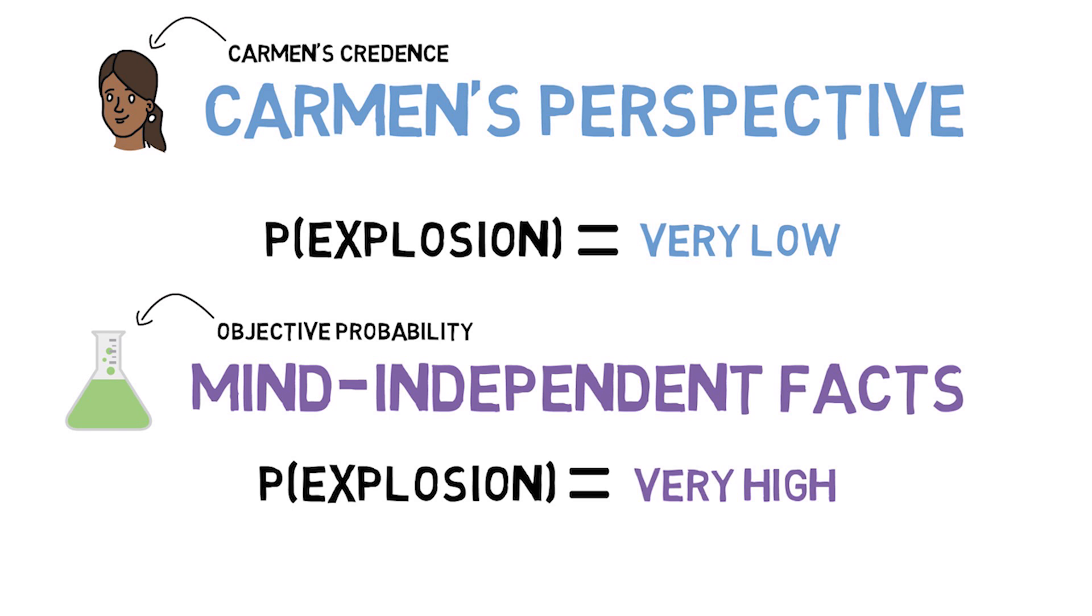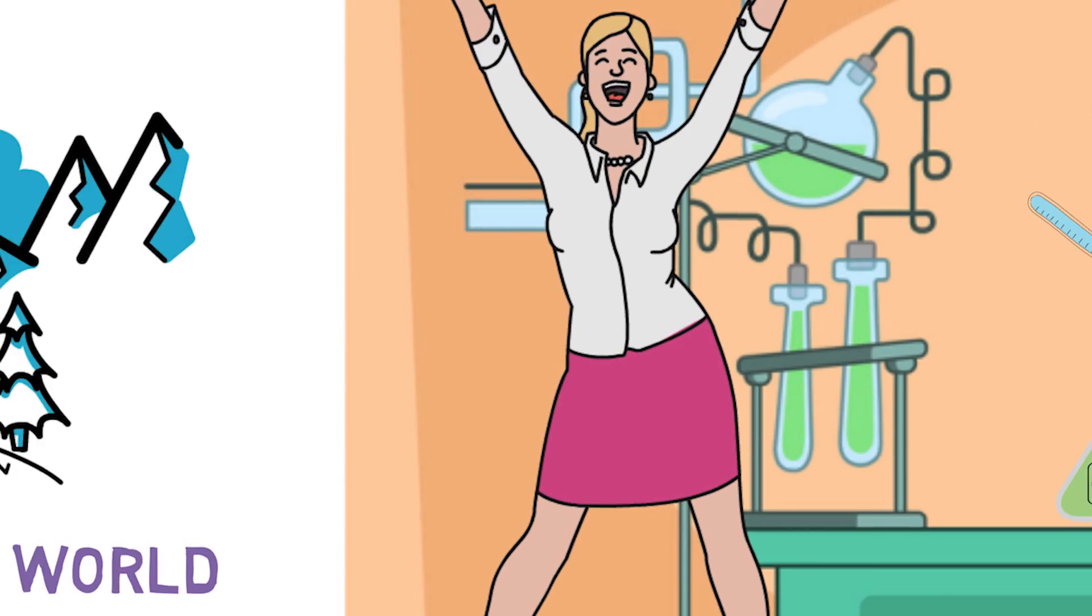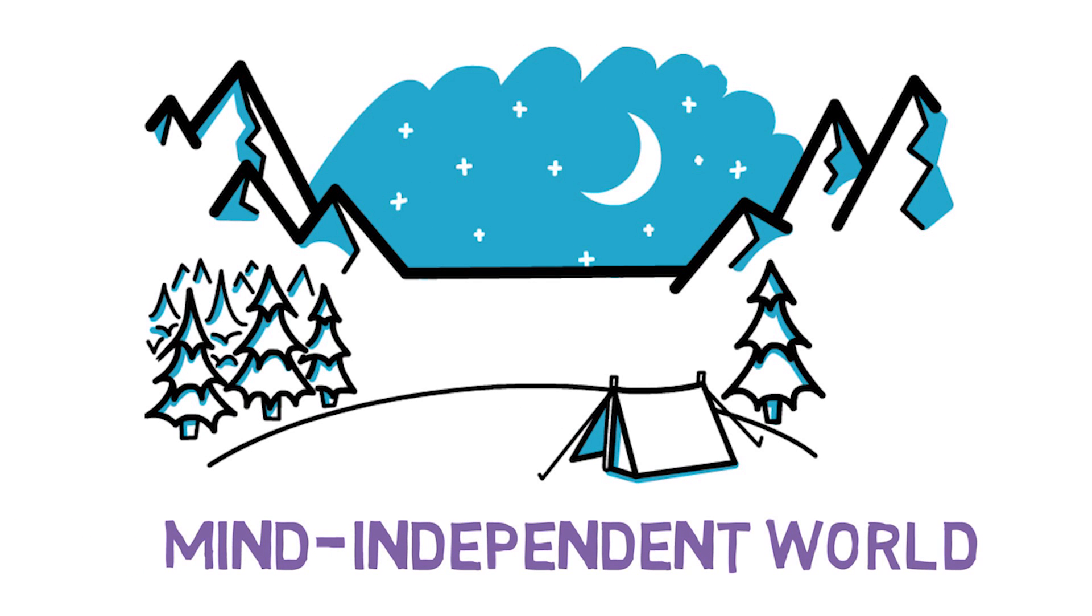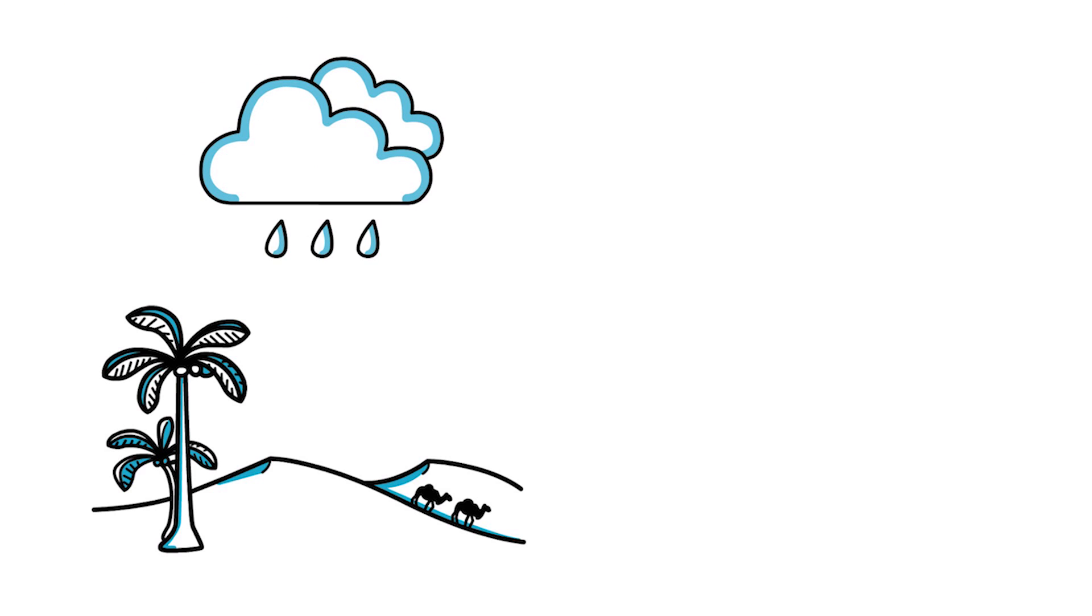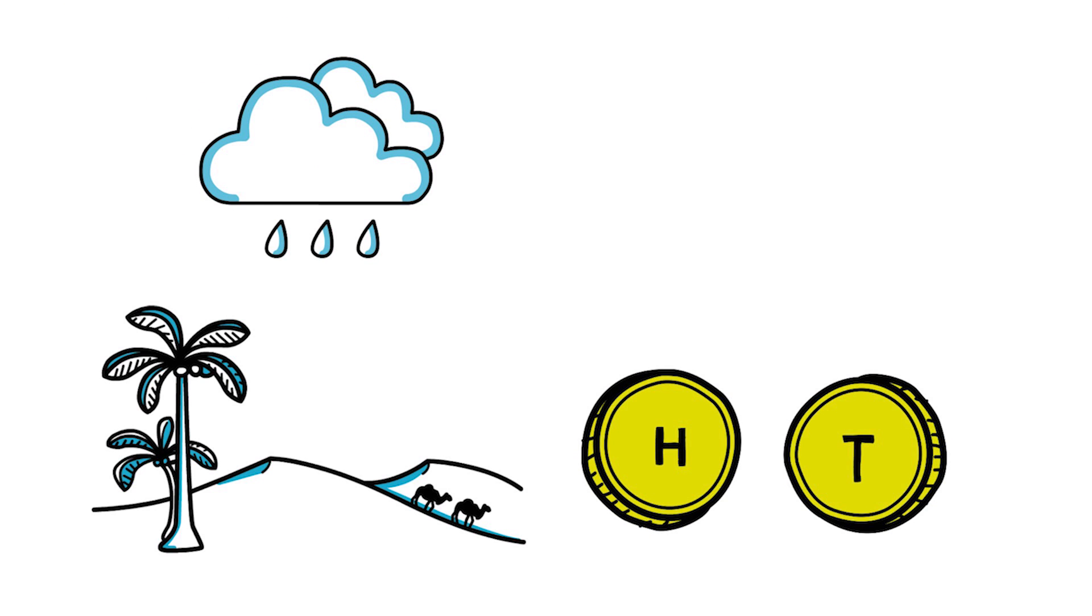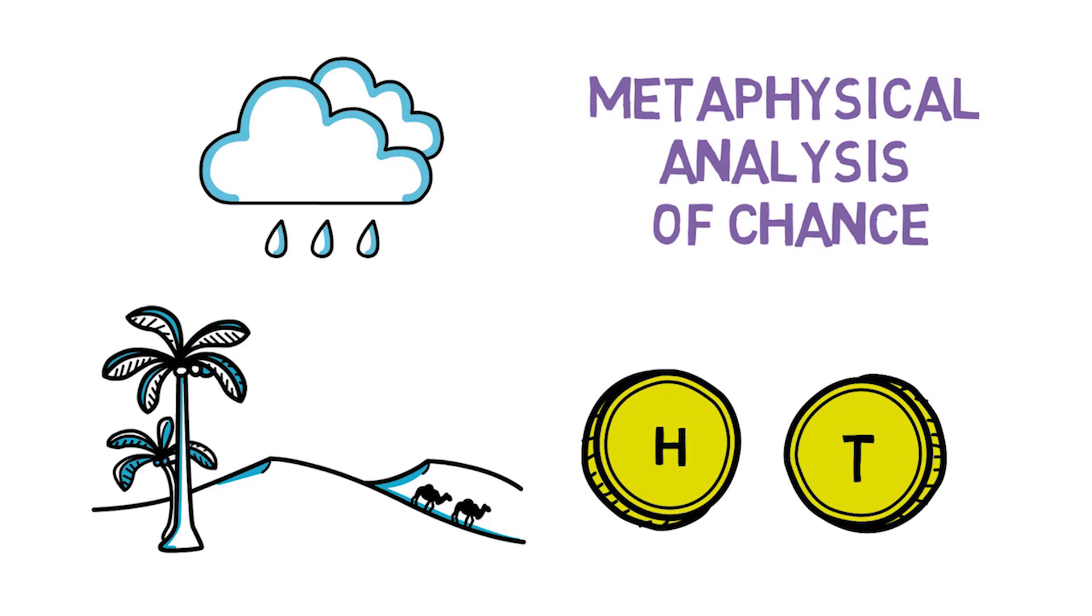Okay, but what is chance? So chances are probabilities that depend only on what the mind-independent world is like. But what kinds of facts about the mind-independent world determine what the chances are? When we say that the chance of it raining in the Mojave tomorrow is very low, or that the chance of this coin landing heads is one-half, what kind of claim are we making about what the world is like? To answer this question is to give a metaphysical analysis of chance.